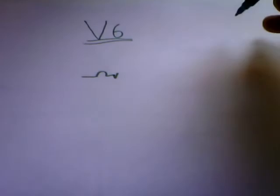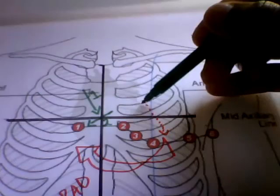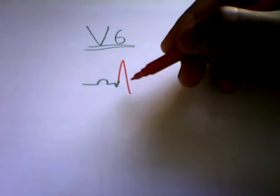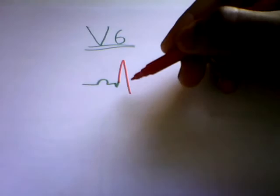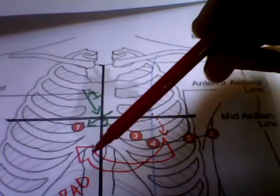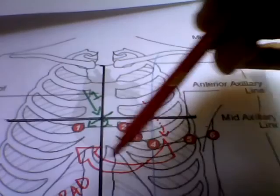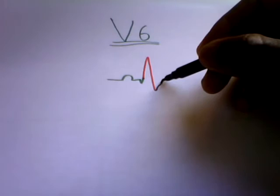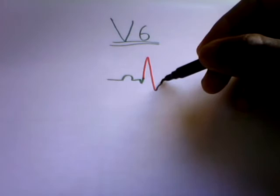And because we still have normal left ventricular activation which is in fact going towards V6, we will have an R wave because that impulse is moving towards V6. And then later on when the left ventricle has been activated, this slow moving impulse as it goes to activate the right ventricle produces a broad S wave.